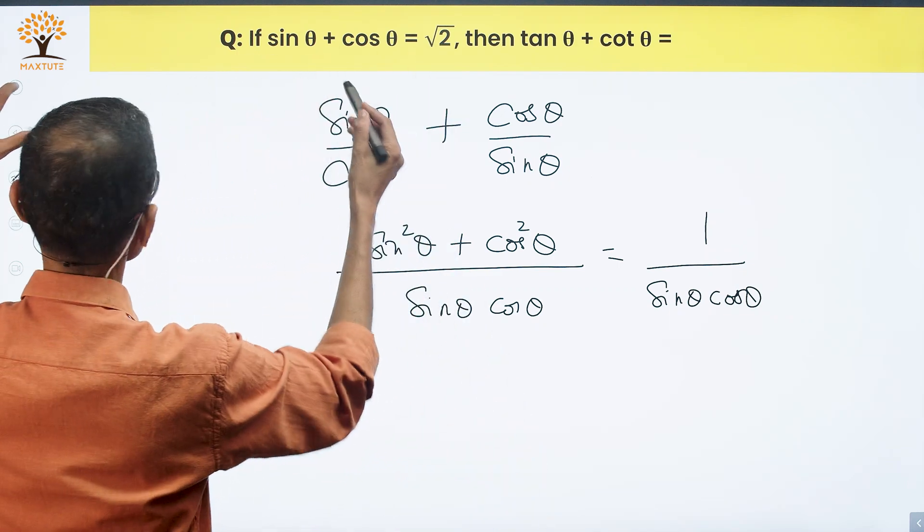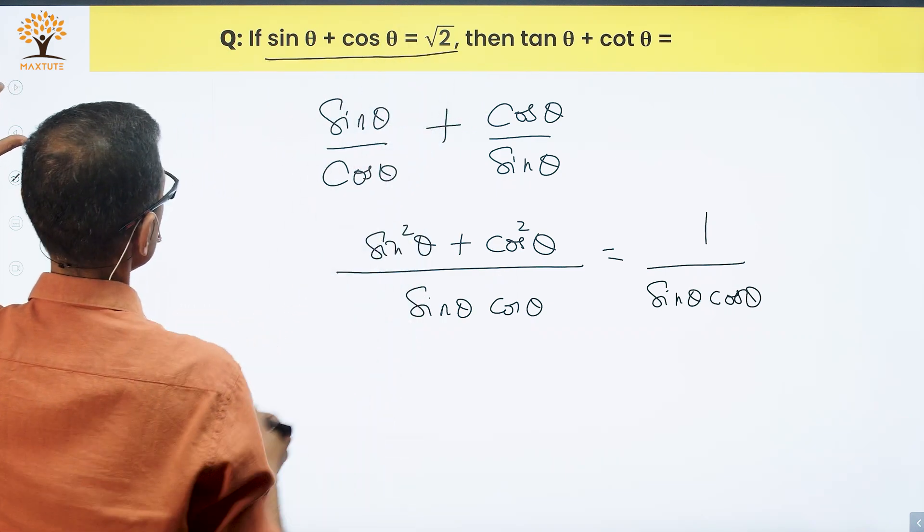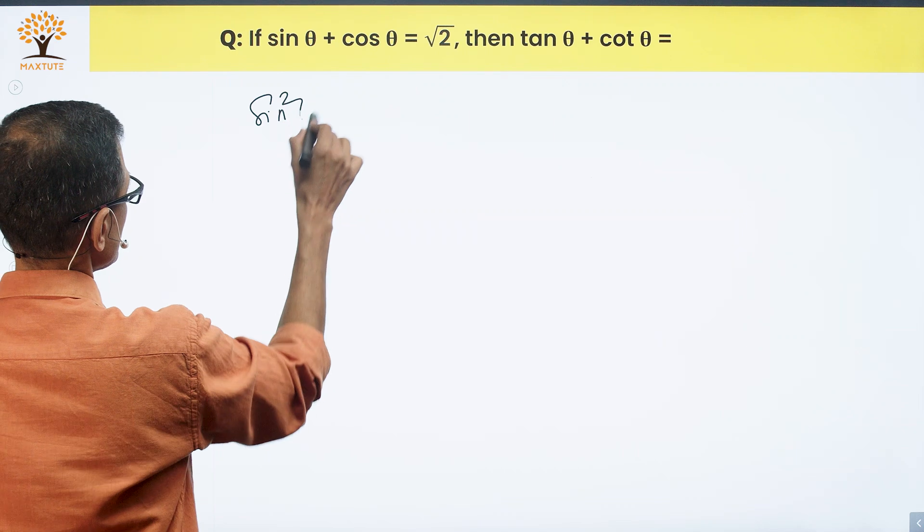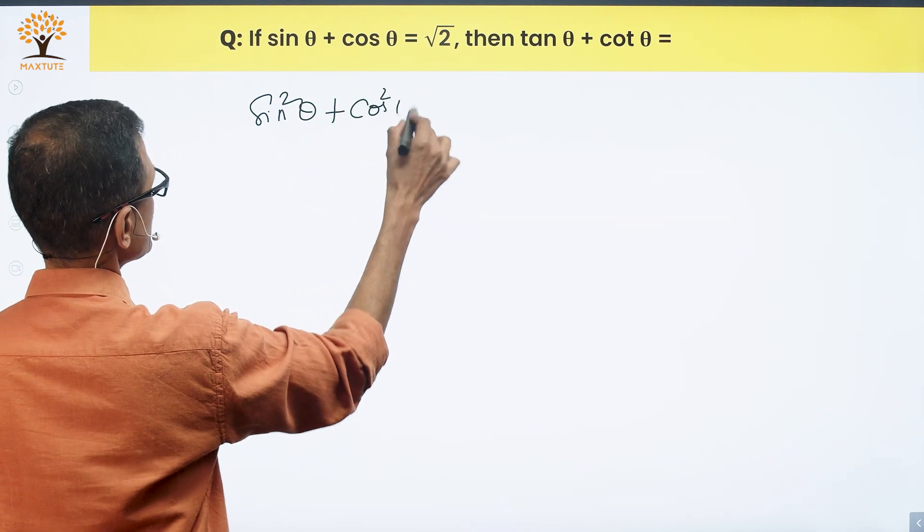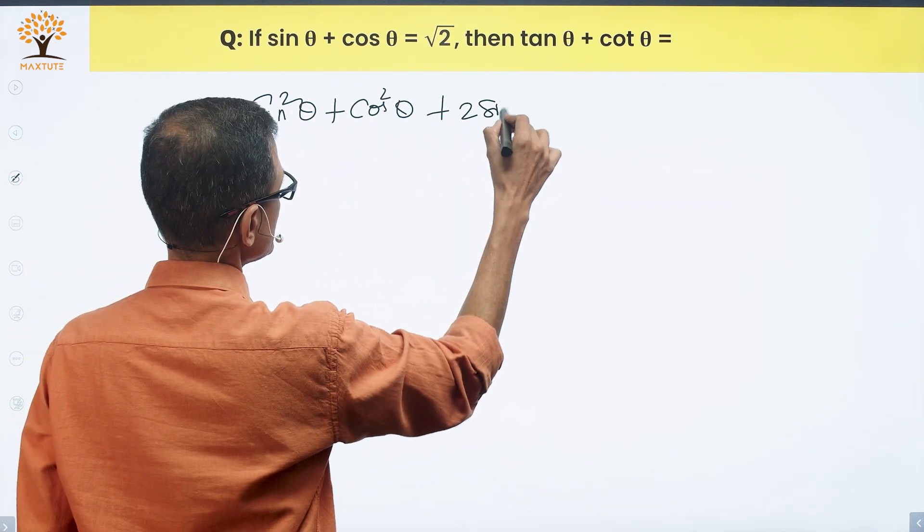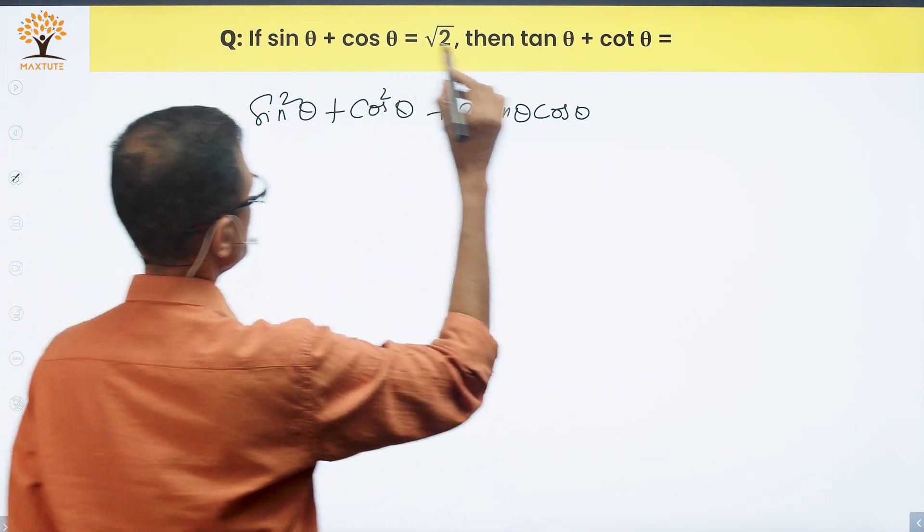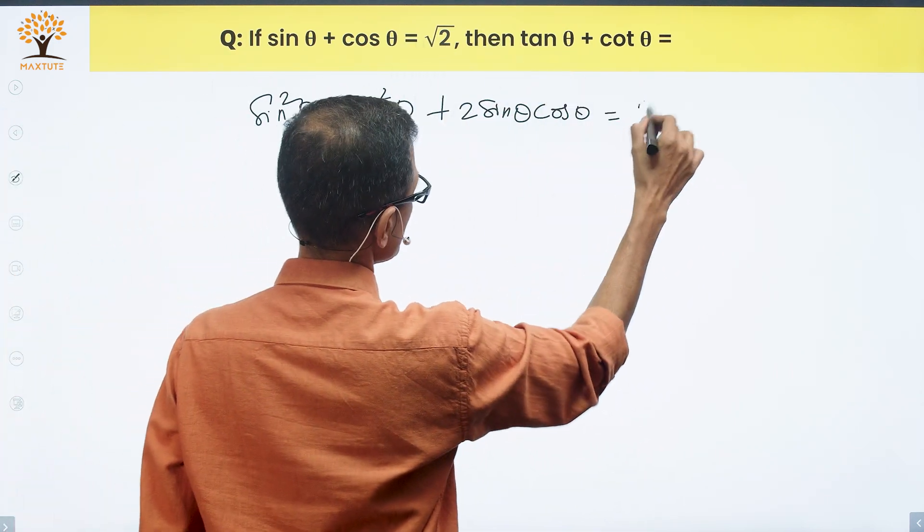Let's square both sides of this information. Sin theta plus cos theta is equal to root 2. So when I square it, sin square theta plus cos square theta plus 2 sin theta cos theta. a square plus b square plus 2ab is equal to root 2 square is equal to 2.